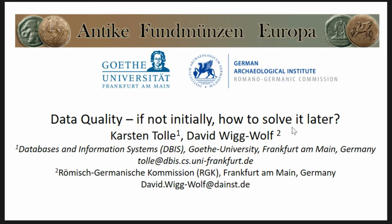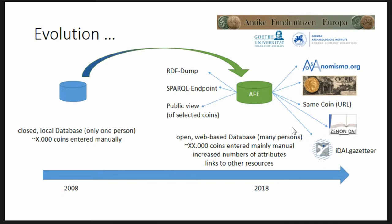David already introduced me and we have been working together for 10 years, which is part of my first slide. To give you a little background on what we've been doing: we started 10 years ago when David had his own database he was working on, with a few thousand coins in there. He was a single person entering all the data, and it was a closed system with no linking. Today we have something called Antike Fundmünzen Europa, or AFE, used by different institutions in Poland, Heidelberg, and also by David.